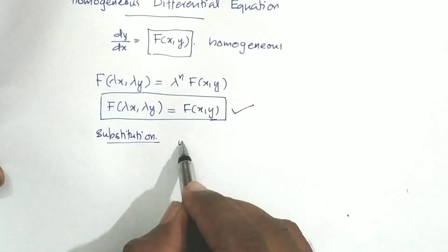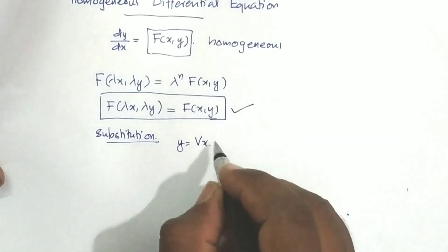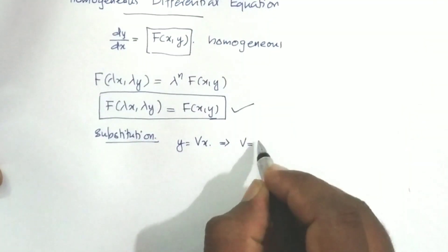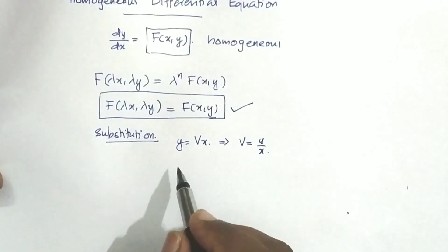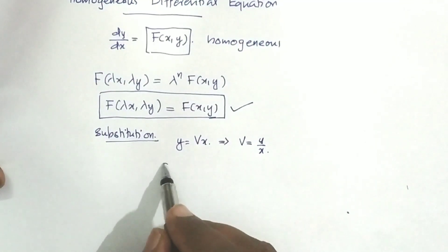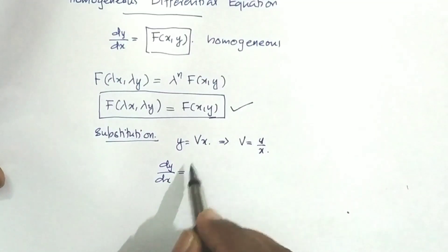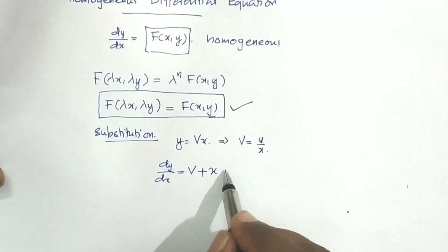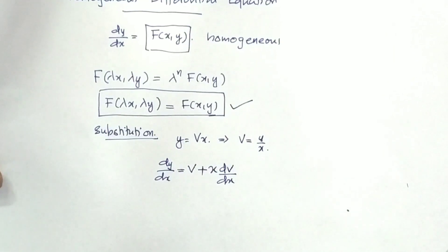The substitution is y = vx. Substitute y = vx into the equation. Using the product rule, dy/dx = v plus x dv/dx.